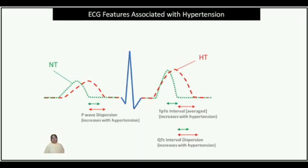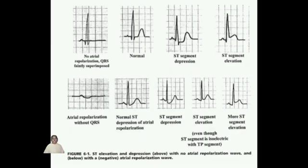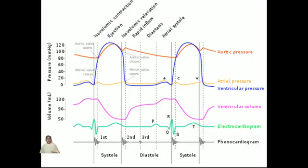Diastole, on the other hand, is the relaxation phase of the heart when it refills with blood. This phase is observed in the ECG as a T-wave. The T-wave represents ventricular repolarization, indicating the recovery of the heart's electrical potential as it prepares for the next contraction.